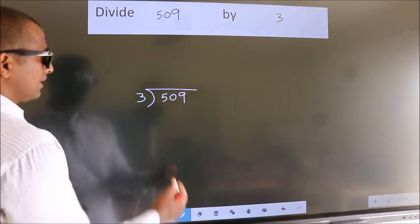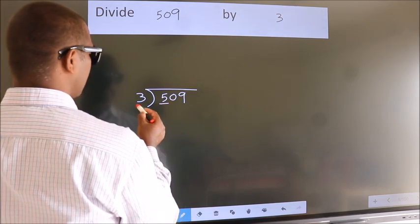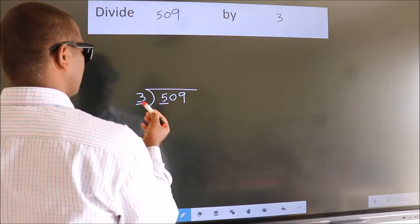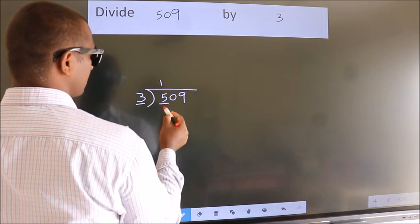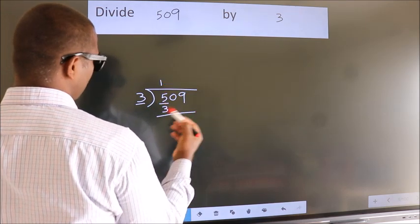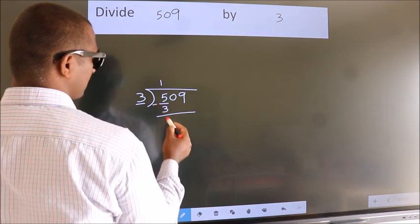Next, here we have 5, here 3. A number close to 5 in 3 table is 3 once 3. Now, we should subtract. We get 2.